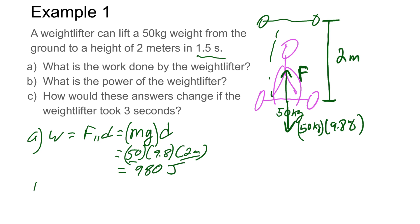Letter B is looking for the power. Power is changing energy over time, or in this case work over time. So we're simply going to go 980 joules and the time that took was 1.5 seconds, and that gives us 653 joules per second or 653 watts.